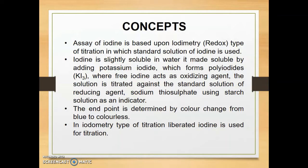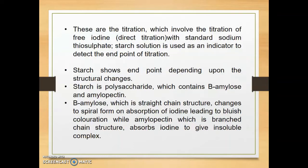In iodometry type of titration, liberated iodine is used for the titration. These are titrations which involve direct titration of free iodine with standard sodium thiosulfate. Starch solution is used as indicator to detect the end point. Starch shows endpoint depending upon structural changes. Starch is a polysaccharide which contains beta amylose and amylopectin. Beta amylose, which has a straight chain structure, changes to a spiral form on adsorption of iodine, leading to bluish coloration, while amylopectin, which has a branched chain structure, absorbs iodine and gives an insoluble complex.